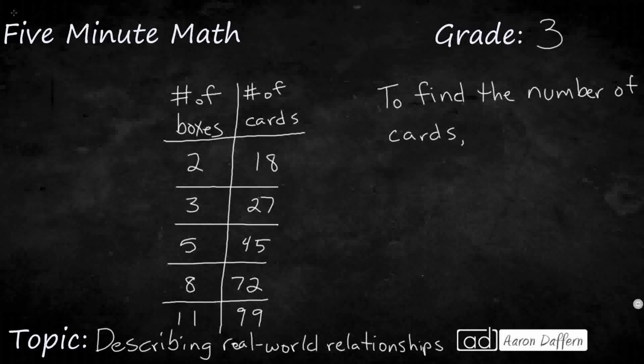So we see we have two boxes, and two boxes contain 18 cards. Three boxes contain 27 cards, five contain 45, so on and so forth. So my numbers are getting bigger. From 2 to 18 is bigger, 3 to 27 is bigger, 5 to 45 is bigger. And they're getting a lot bigger, from 5 to 45.